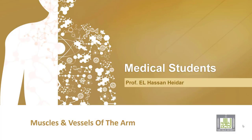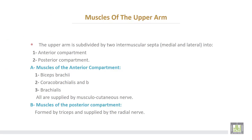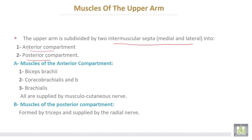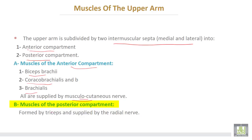Muscles and vessels of the arm. The arm is divided by two intermuscular septa — medial and lateral — into an anterior compartment and a posterior compartment. The anterior compartment is formed by three muscles: biceps, coracobrachialis, and brachialis. All these muscles are supplied by the musculocutaneous nerve.